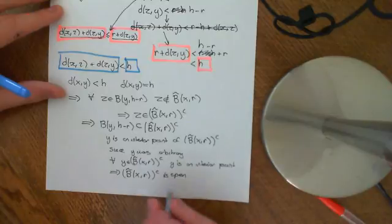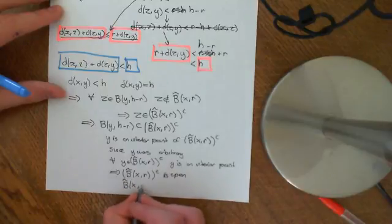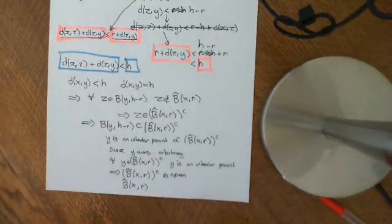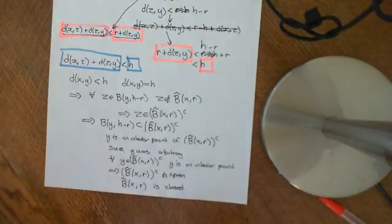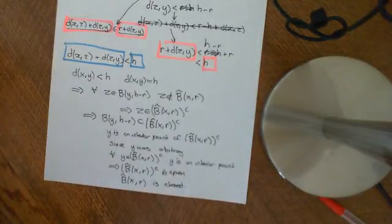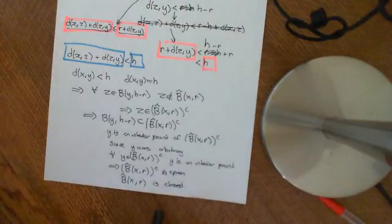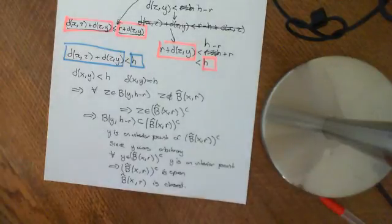And that implies that the closed ball itself is closed, since the complement of an open set is closed. So the closed ball centred at x of radius r is indeed closed. That is the proof that a closed ball is in fact a closed set. The way we proved it was by taking the complement of the closed ball, showing that it was an open set, which means the closed ball is the complement of an open set — exactly the definition of a closed set.